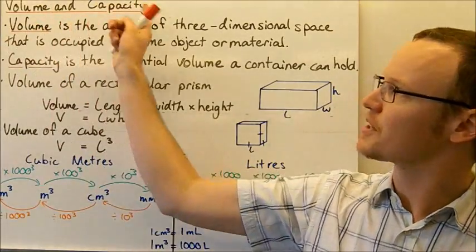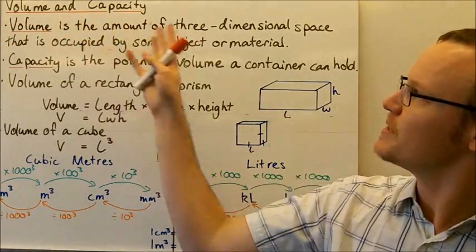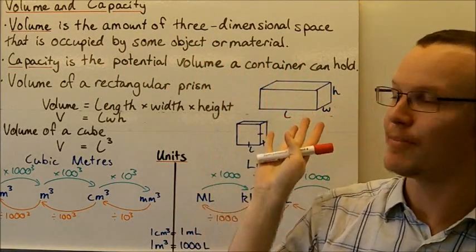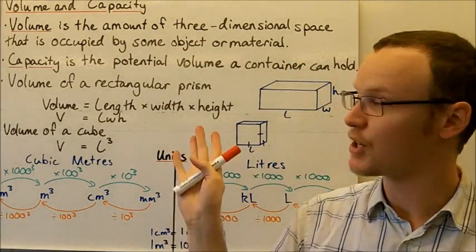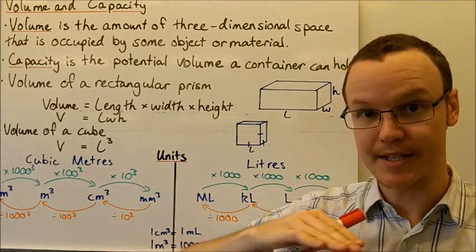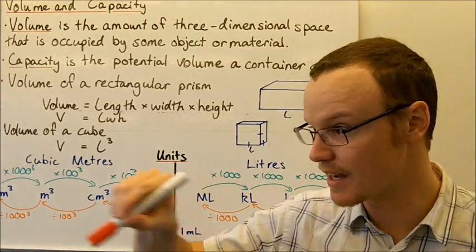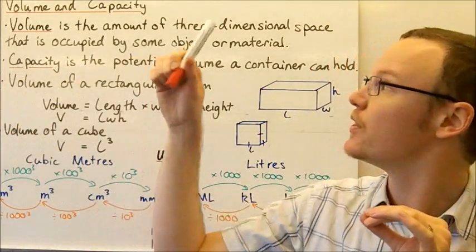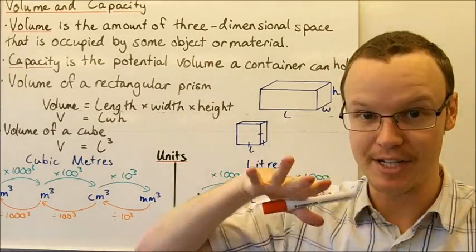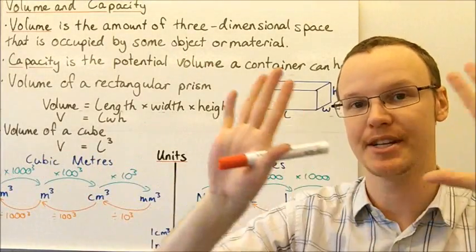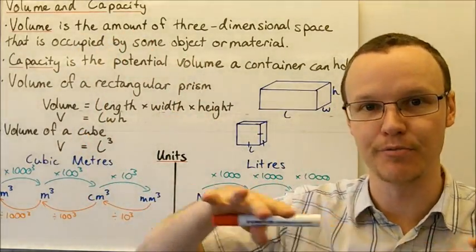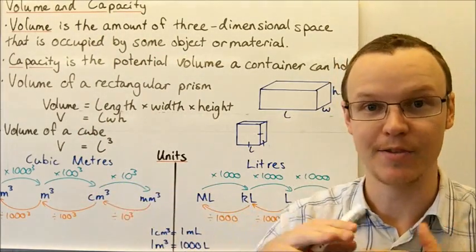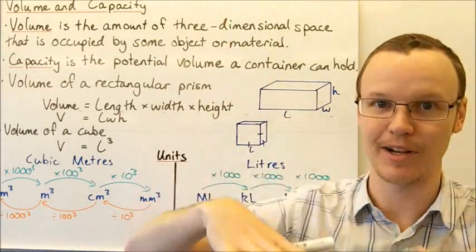Today we're going to look at volume and capacity. Volume is the amount of three-dimensional space that is occupied by some object or material. Whereas area is a two-dimensional space and length is one-dimensional — it goes along in one direction — area goes out in two directions, and volume goes out in three directions: length, width, and height or depth.